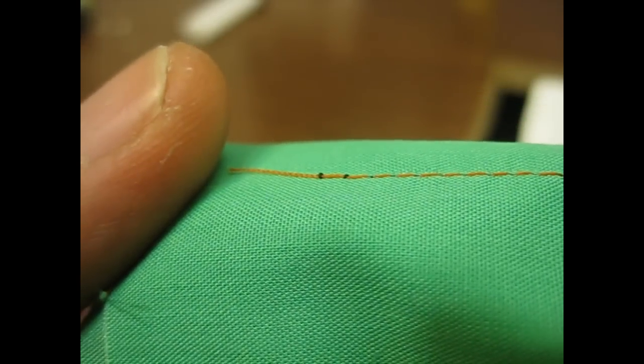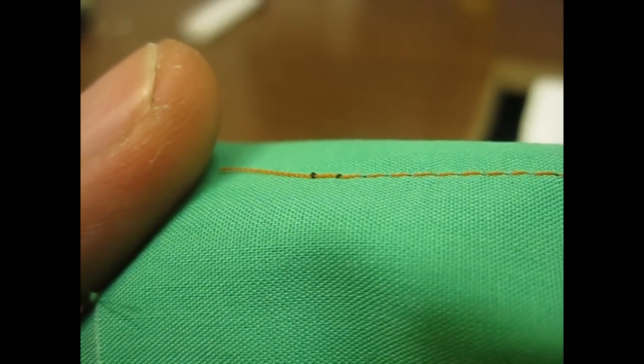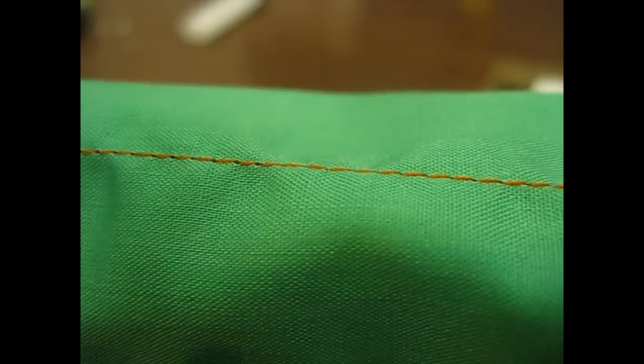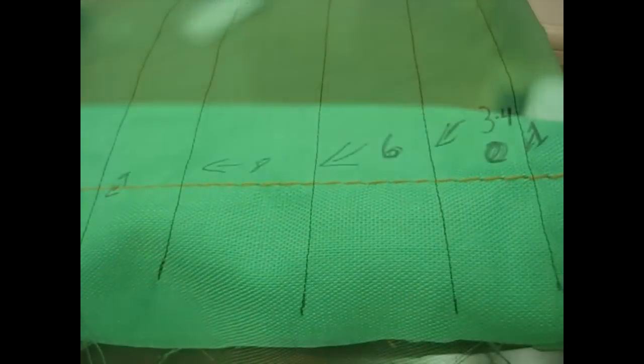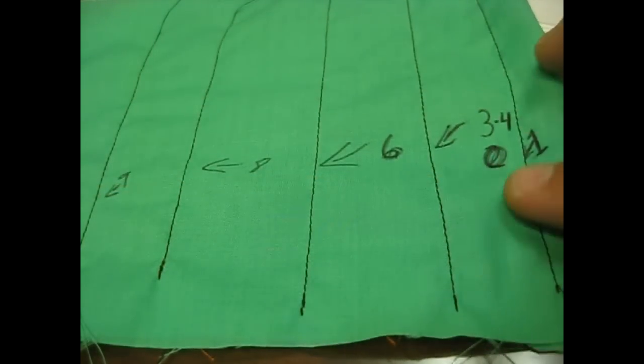You can see at the end here something that we don't want which is basically just the bobbin thread being held on by the top thread which happened at the end there. It didn't really happen too much, just at the beginning and the end of the stitch, but you kind of want to avoid that.